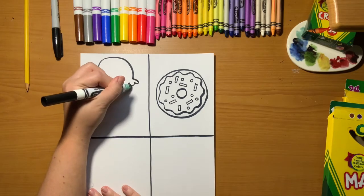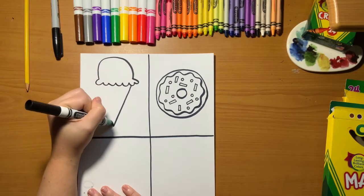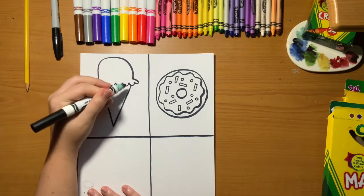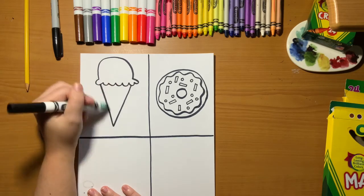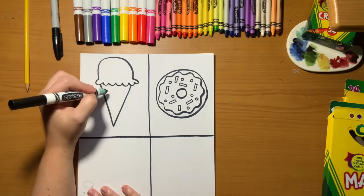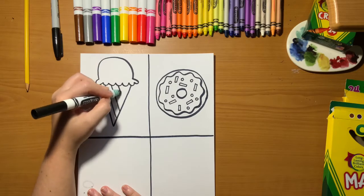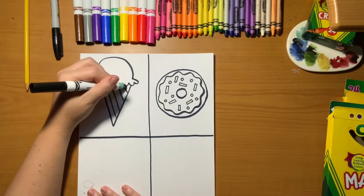Now to draw the cone, it's just two diagonal lines like the letter V that connects to our ice cream scoop. If you want to add lines for detail in the ice cream cone, you can, but you don't have to.